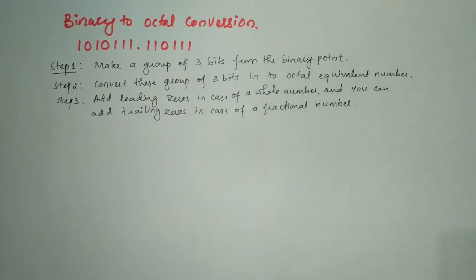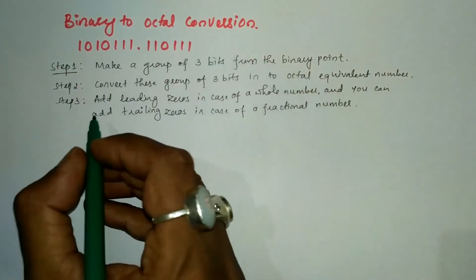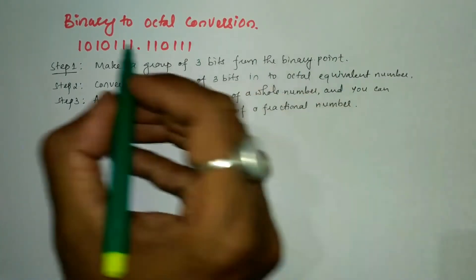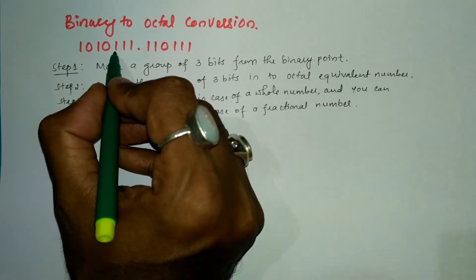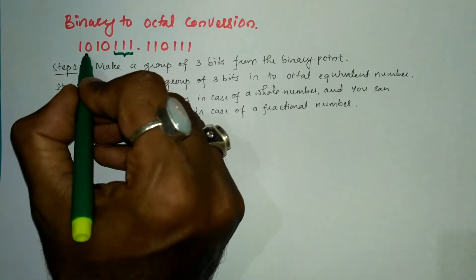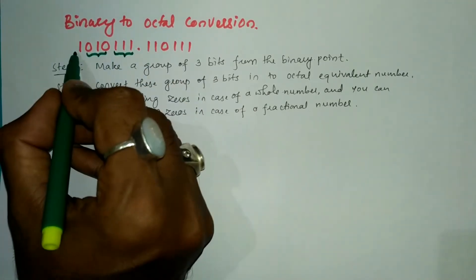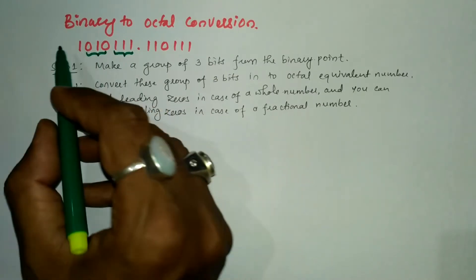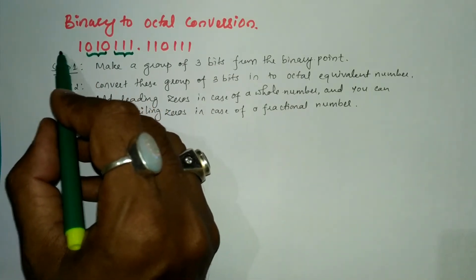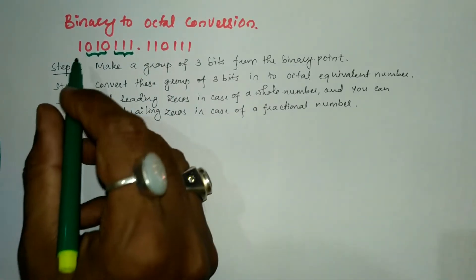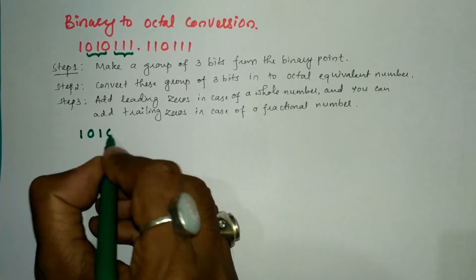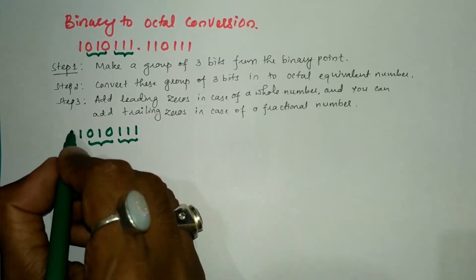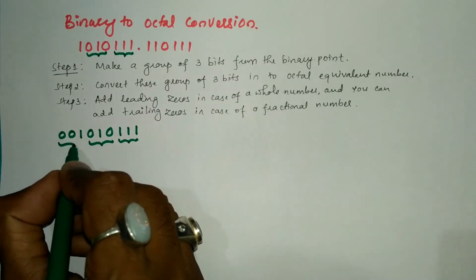Now let us consider the given binary to octal conversion example. Following Step 1, we make a group of three bits from the binary point — the first three bits and the next three bits. We are left with only one bit on the left-hand side, so we add two leading zeros to make it a group of three bits. The number is 1, 0, 1, 0, 1, 1, 1.